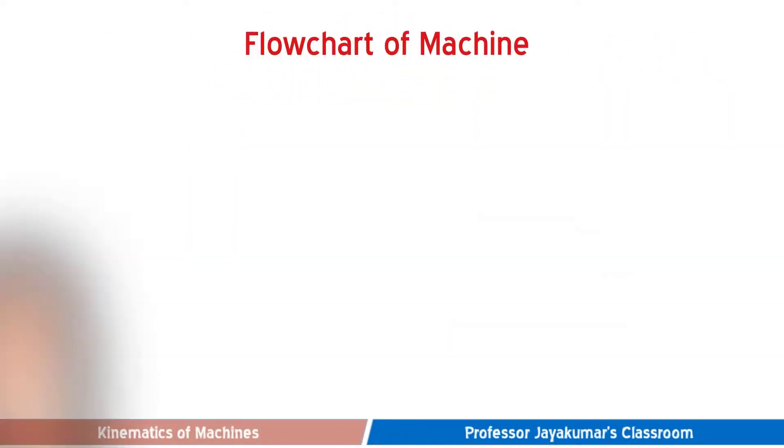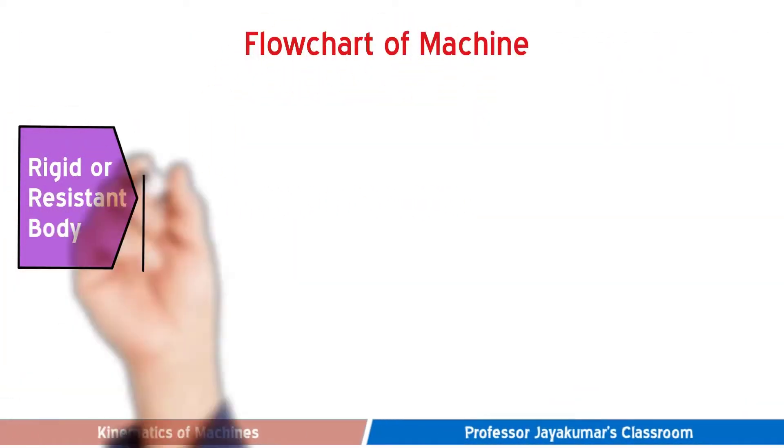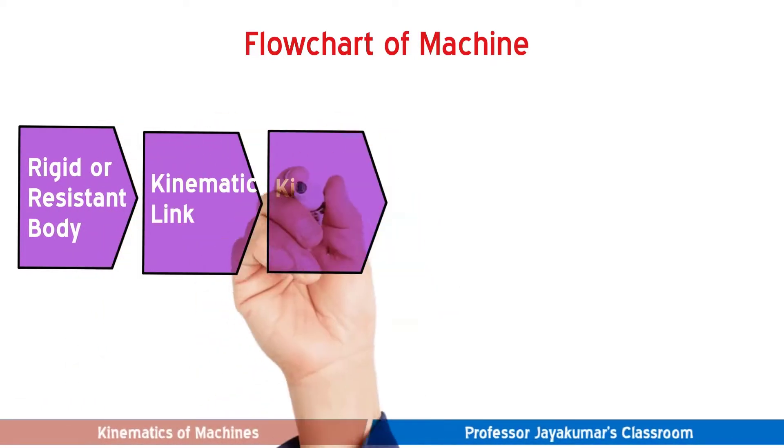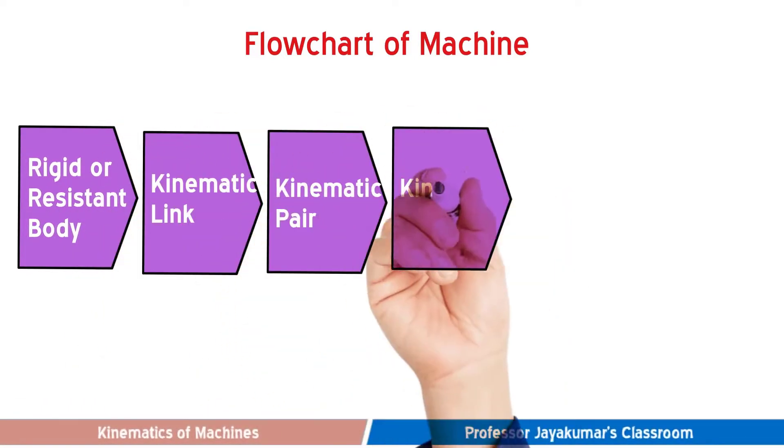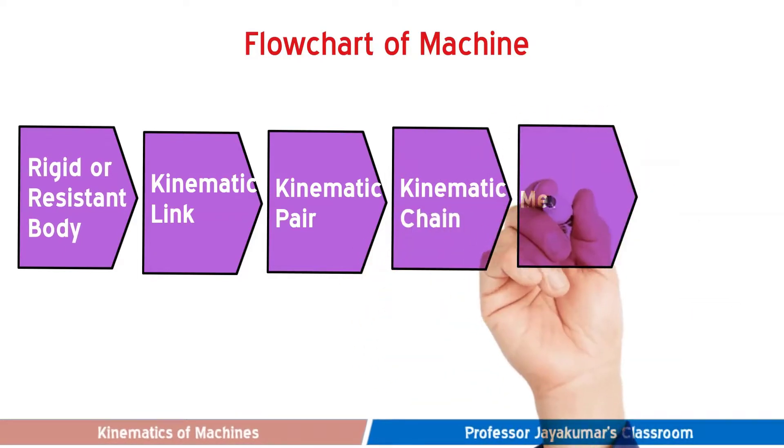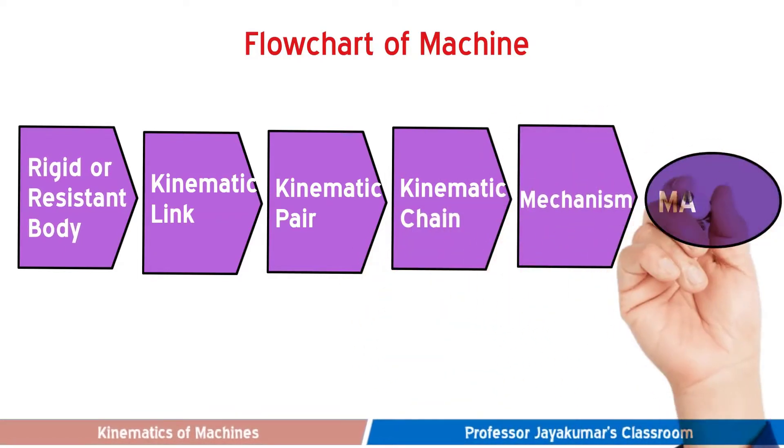In the flowchart of machine given below, we have already covered about kinematic links, kinematic pairs and kinematic chains in our earlier lecture videos. In this video, we are going to talk about mechanisms and their types.